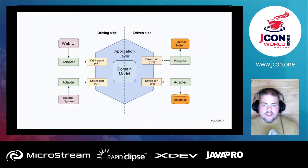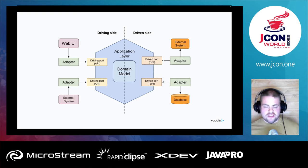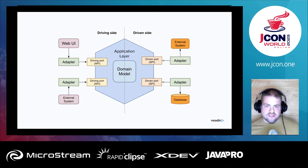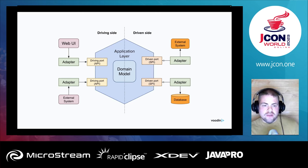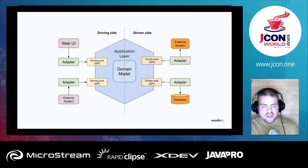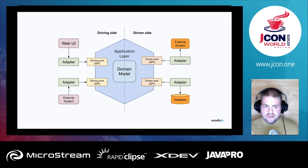Another thing I learned from Vernon's red book was the hexagonal architecture. Prior to this I had been mostly working with layered architectures — a database access layer at the bottom, then entities, then services with business logic, then a UI on top, with rules about which layers could communicate. The hexagonal architecture expands on this: we have the domain model in the middle, application services around it, a driven side with driven ports through which the application calls out to the outside world, and a driving side with driving ports or APIs that allow the outside world to call in. Then we have adapters that either call these ports or implement them.